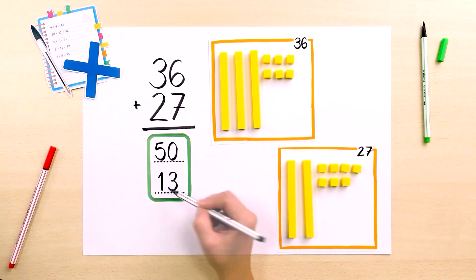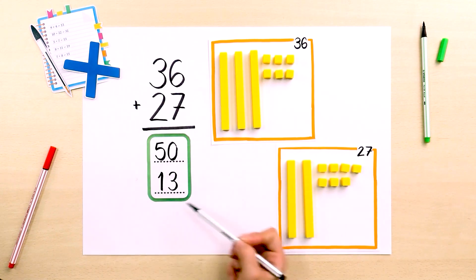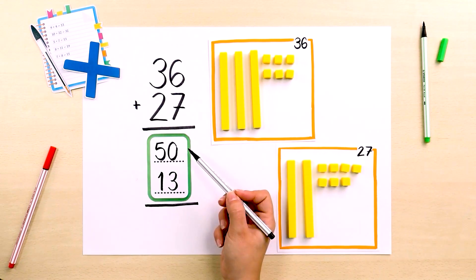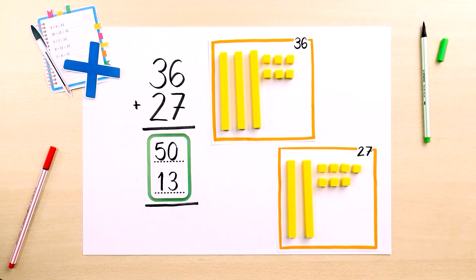We can write these intermediate calculations in the green box. So we have 50 plus 13 cubes, in other words 63, an answer we get quickly if we have enough experience in the jumping strategy.